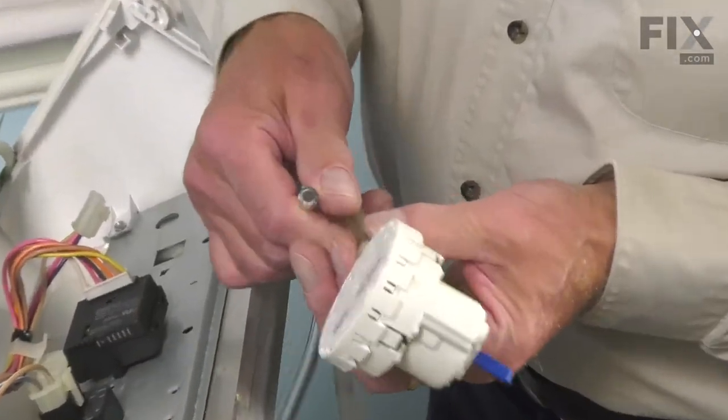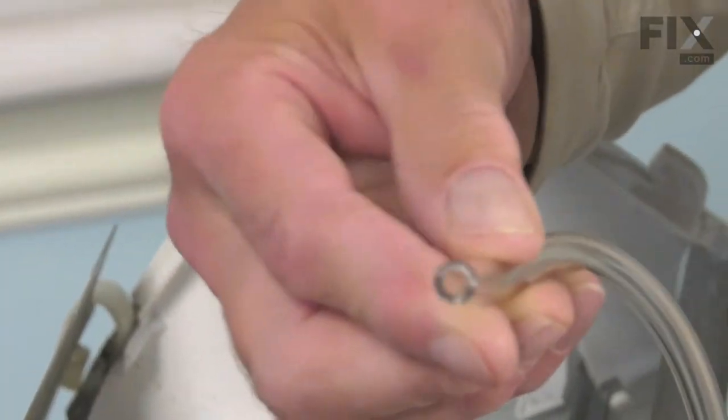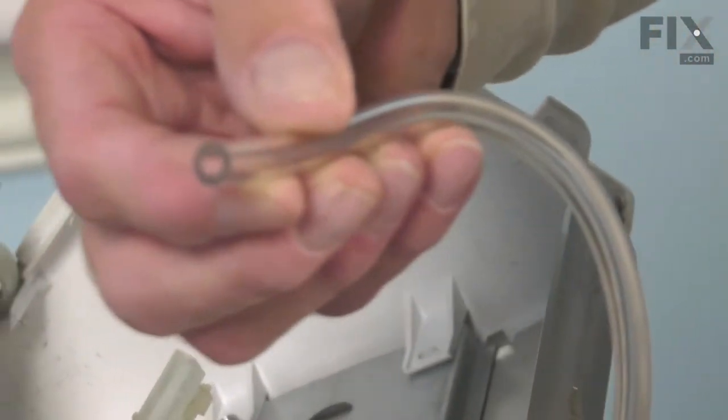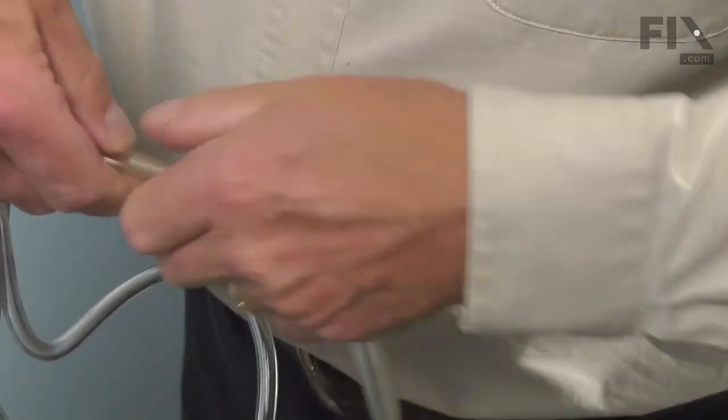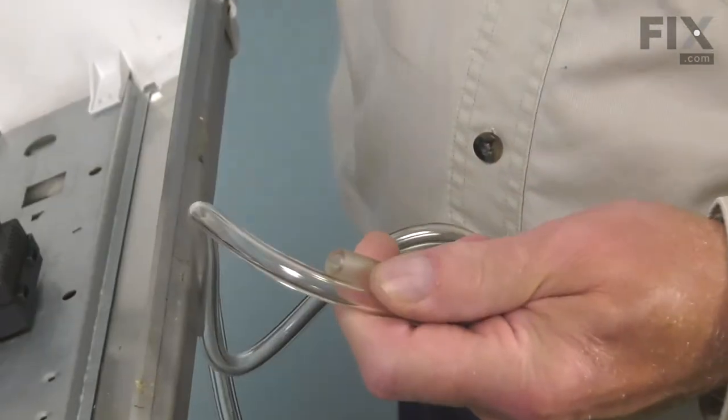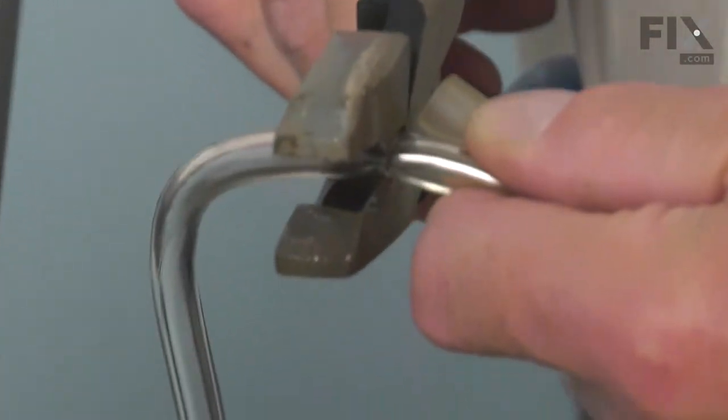Now, the new water level control comes with a replacement air dome tube. We suggest that you replace that at the same time. Depending on the model, you may need to trim some off of that. We're going to measure it out to be the same length as the original. Make it a nice square cut.